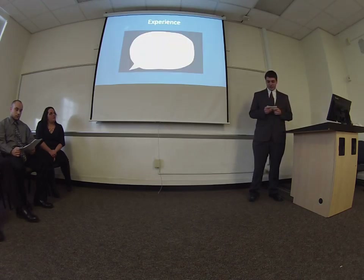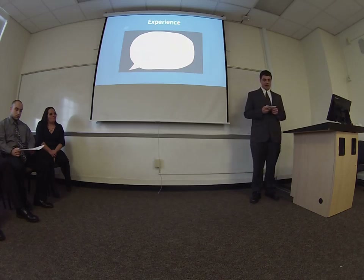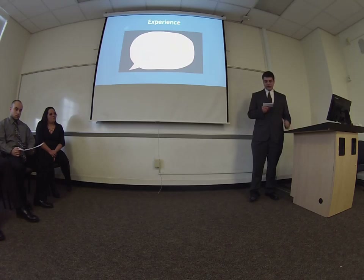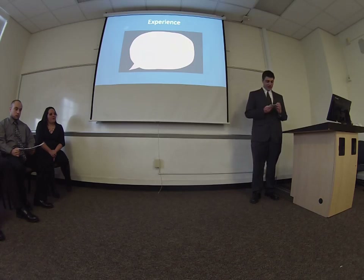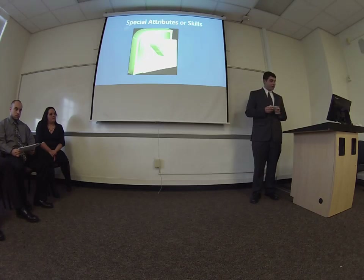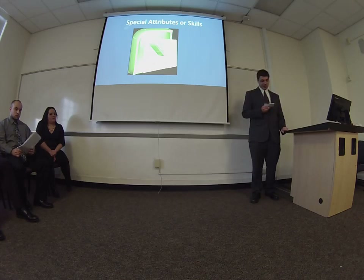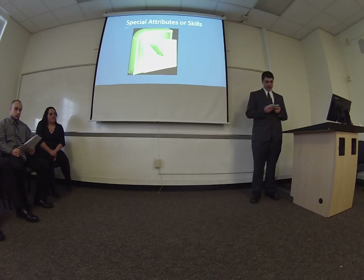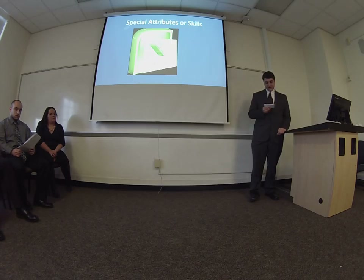Next is experience. Most jobs are looking for applicants that have some experience in the field, whether it be an internship, another job, or volunteer work in the field. For example, if you're applying to be a teacher, it may say something like: having four years of experience in an educational program in a school or other educational institution. Next is special attributes or skills — this section talks about skills they are looking for, such as being proficient in Microsoft Word, PowerPoint, Excel, how many words per minute you can type, or good interpersonal and written communication skills.